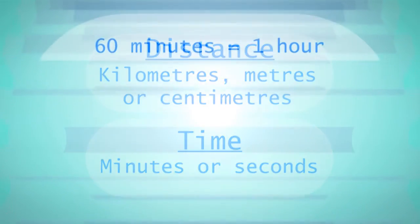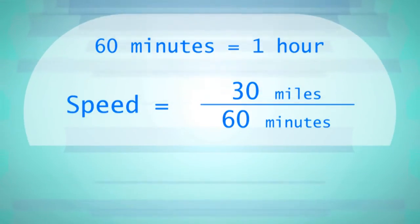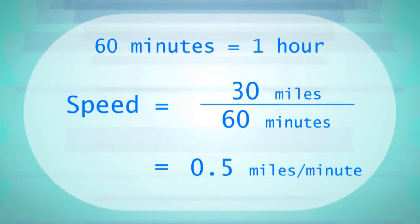So for example, if we used minutes in our previous formula, there are 60 minutes to an hour, that gives us 30 miles divided by 60 minutes. Then we can actually determine our speed per minute, which gives us half a mile per minute.